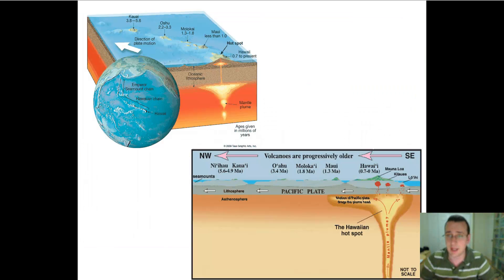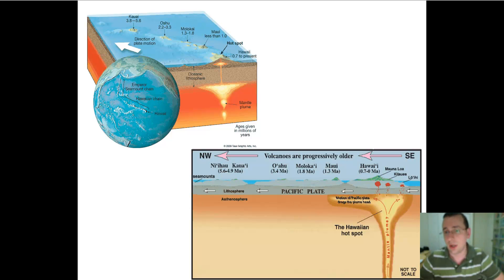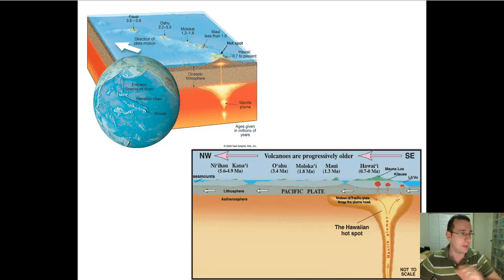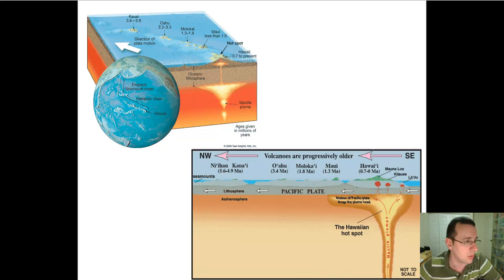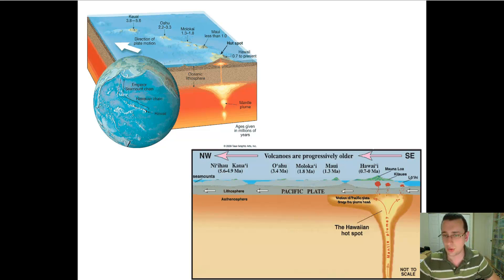The hot spots idea is that if you have a rising plume of magma underneath the crust, it will punch through the crust, melt it, and form volcanoes — usually shield volcanoes in the middle of the ocean, which create islands such as Hawaii. Large island chains then erode into guyots, forming big chains in the middle of the ocean. Examples include the Hawaiian chain in the Pacific as well as the Emperor's Seamount chain, both created by this kind of hot plume activity.